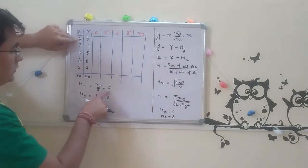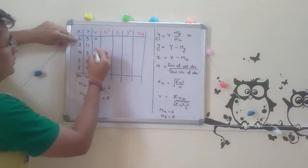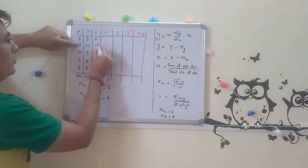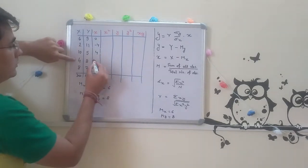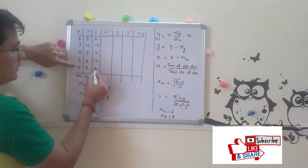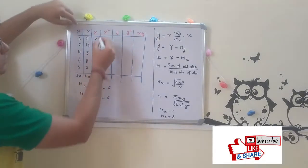6 minus 6 is 0, 2 minus 6 is minus 4, 10 minus 6 is 4, 4 minus 6 is minus 2, 8 minus 6 is 2.